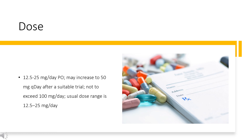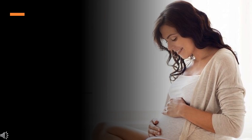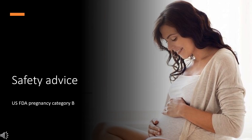For Heart Failure: initially 25 mg per day orally, not to exceed 100 mg per day. Safety advice: Chlorthalidone is FDA Pregnancy Category B — no proven risk in humans.